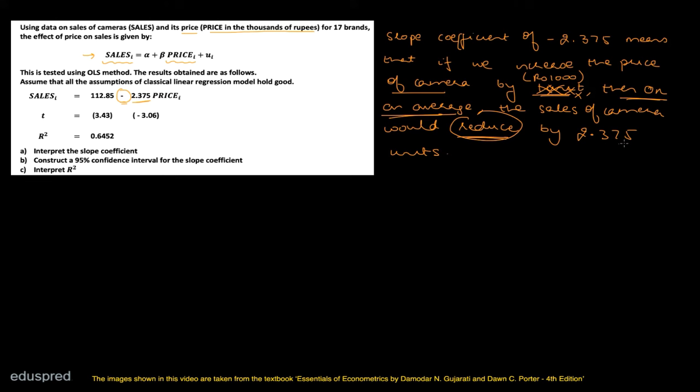Are we given any particular unit for the dependent variable, i.e., the sales variable? There is no particular unit given for this variable, so we can leave it as is. That's Part A. Let's move to Part B.